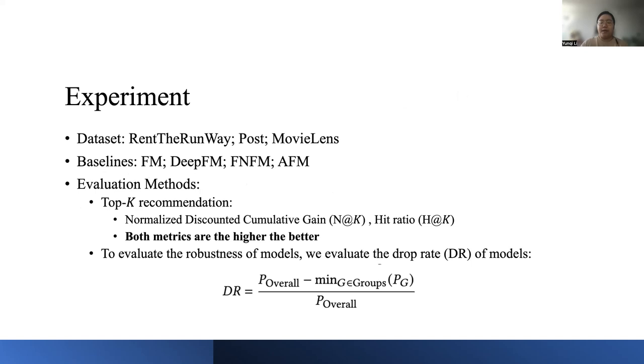Now we introduce the experiments. We consider three public open datasets for recommendation tasks: RentTheRunway, Yelp, and MovieLens. To evaluate the effectiveness of our proposed model, we select several representative factorization machine models for comparison: FM, deep model DeepFM, field-aware neural factorization machine FNFM, and attentional factorization machine AFM.